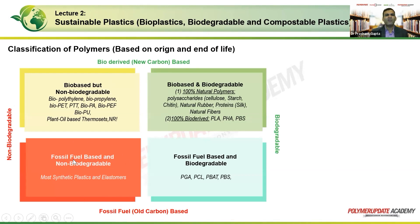There is a classification of polymers into four categories. The first is fossil fuel-based and non-biodegradable — everything we commonly use today. The second, shown in yellow, is bio-based but non-biodegradable, including plant oil-based thermosets, epoxies, and natural rubber. The third quadrant — what we want — is bio-based and biodegradable, which is fully sustainable. The fourth is fossil fuel-based but biodegradable, including polyglycolic acid, polycaprolactone, PBAT, and polybutylene succinate. It is important to understand that not all bio-based materials are biodegradable.